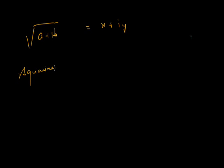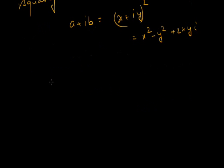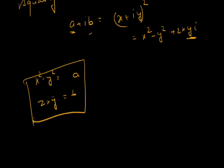So the square root of a plus iota b equals x plus iota y. Squaring both sides gives x squared minus y squared plus 2xy·iota. Here iota squared is minus 1, so we get x squared minus y squared plus 2xy·iota. Comparing real parts: x squared minus y squared equals a, and comparing imaginary parts: 2xy equals b.